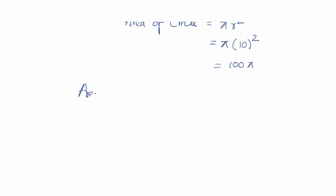100 pi. Area of shaded region: we have 200, we have to remove 100 pi, which results in 100 as a common factor, that is 100 times 2 minus pi.